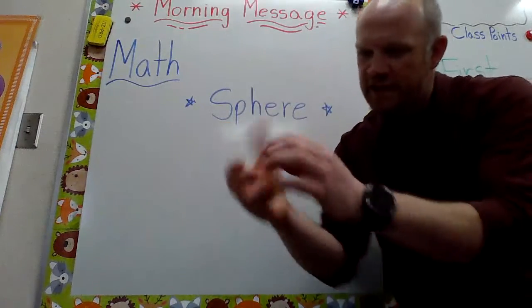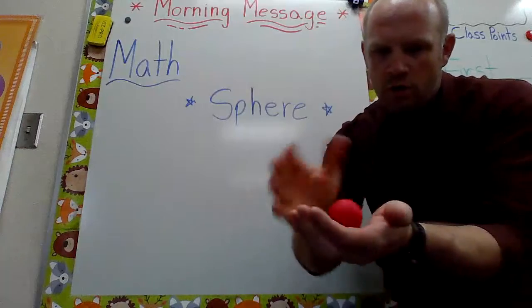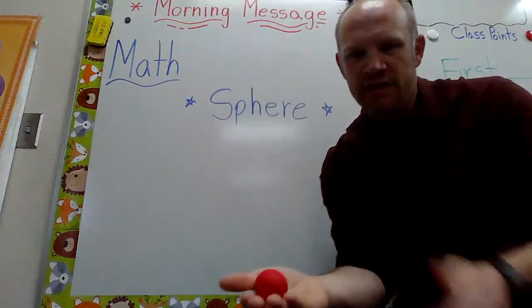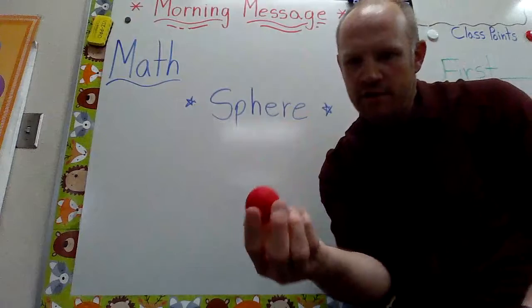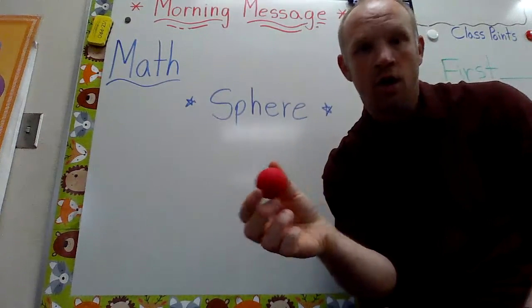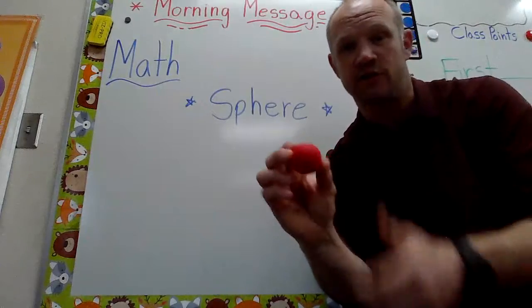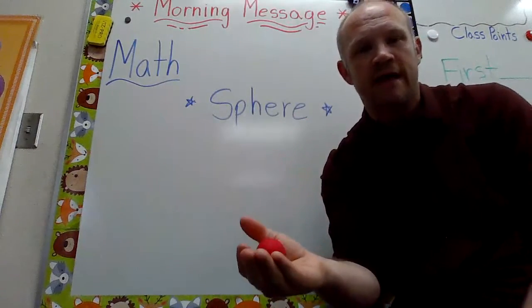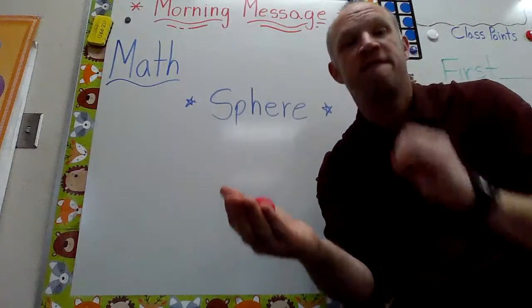So if we look at this round rolly sphere, are there any flat sides to a round rolly sphere? No, there aren't any flat sides to a round rolly sphere. So a sphere has zero faces.